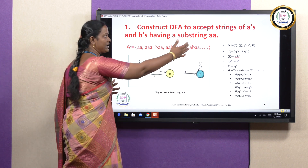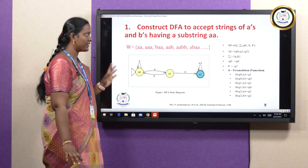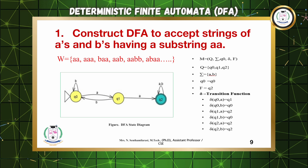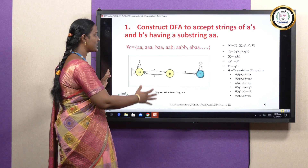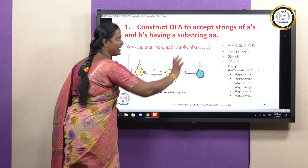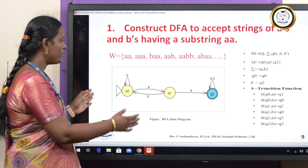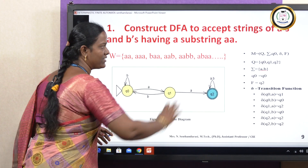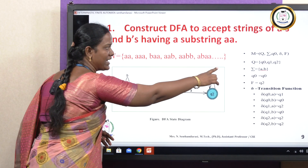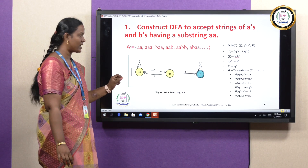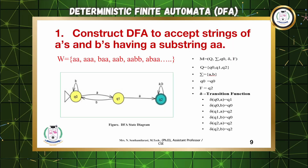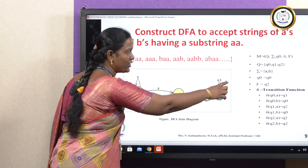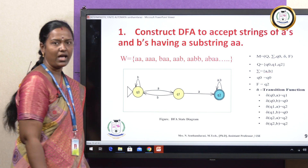Based on this diagram, we write the five tuples. M = (Q, sigma, Q naught, delta, F). Q, the set of states, is {Q naught, Q1, Q2}. Sigma, the input alphabet, is {A, B}. Q naught is the initial state. The final state F = {Q2}, shown with a double circle. Now we write the transition function: delta(Q naught, A) = Q1; delta(Q naught, B) = Q naught.